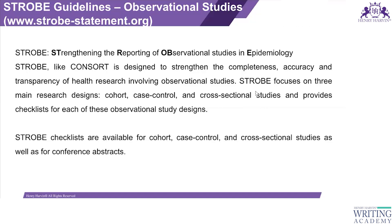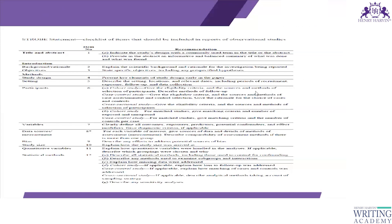I will point out where the checklist items differ for each type of study. The first item in the STROBE checklist is the title and abstract. In the title, you have to mention which type of study it is — whether it is a cohort, cross-sectional, or case-control study — and what variables are being studied. The abstract must be written in a structured manner, providing an informative and balanced summary of what was done and what was found.